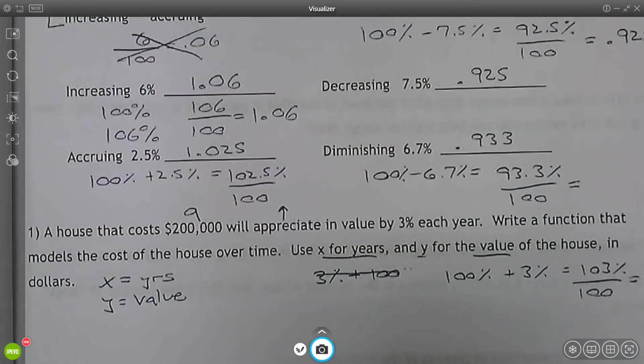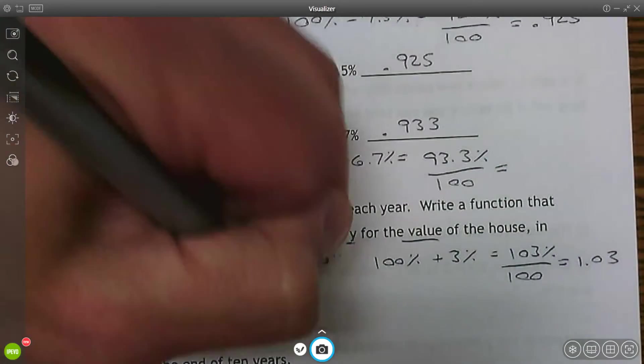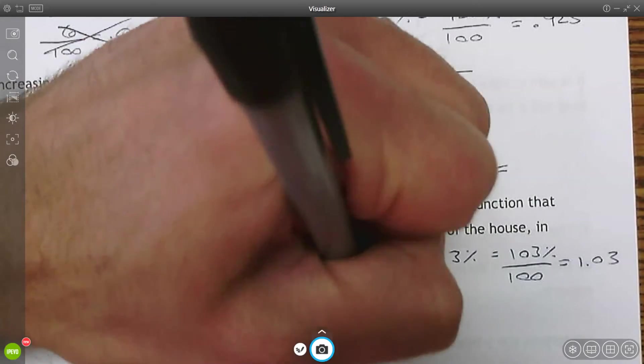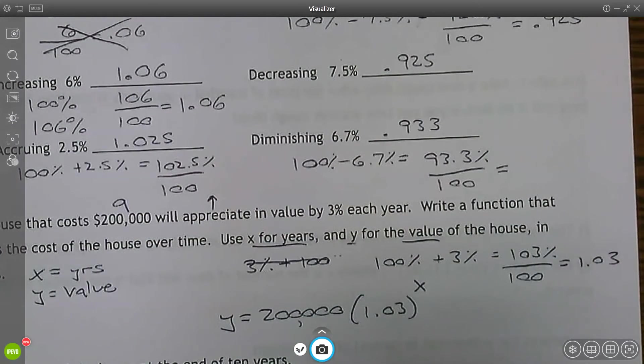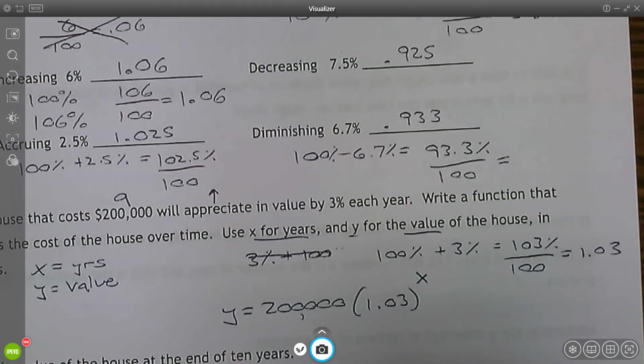So I'm going to take this 3%. I need to figure out the new base. You're always starting at 100 plus 3% is 103%. And I'm going to convert that to a decimal, just what I did above. So this function is going to be Y equals the initial value or the starting value, 200,000 times 1.03. That's the base to the X. Just checking. The base is bigger than one. This represents exponential growth.